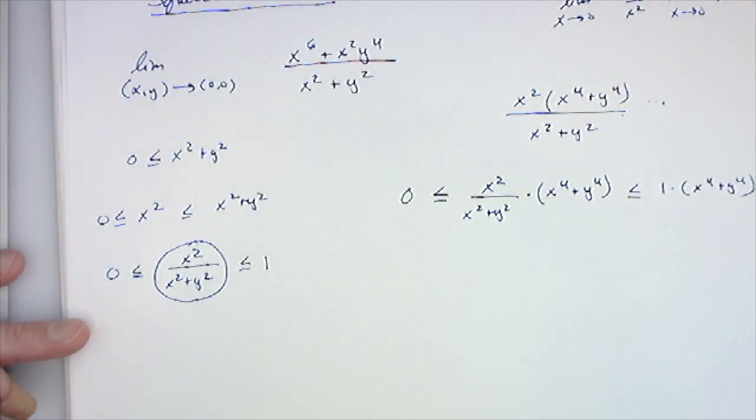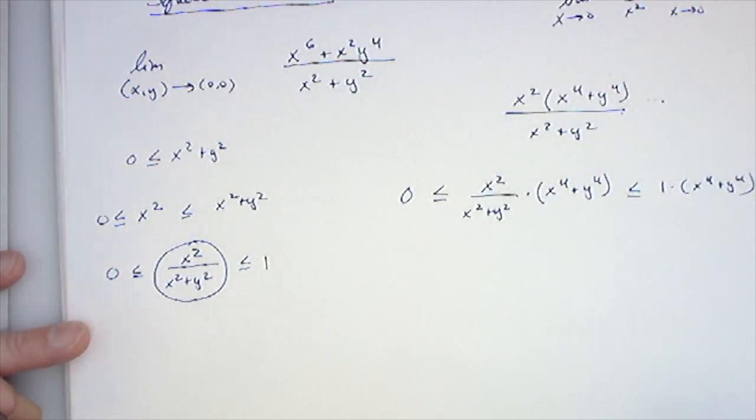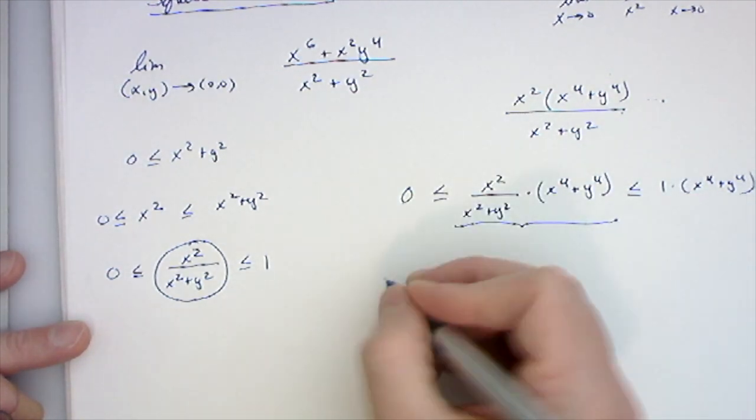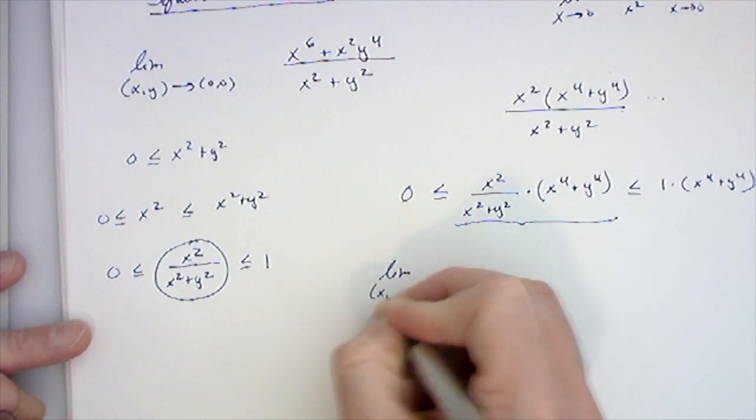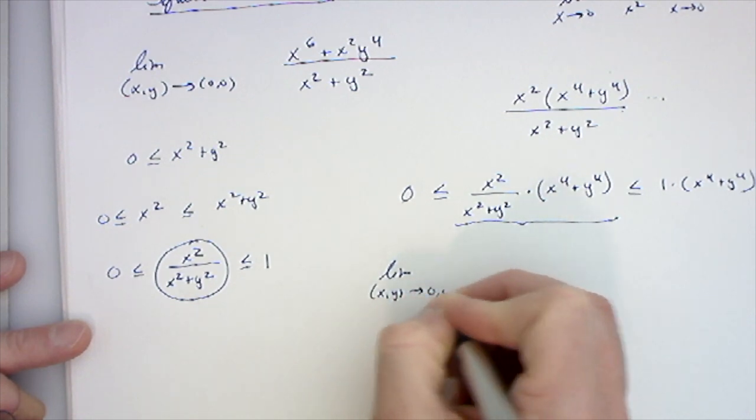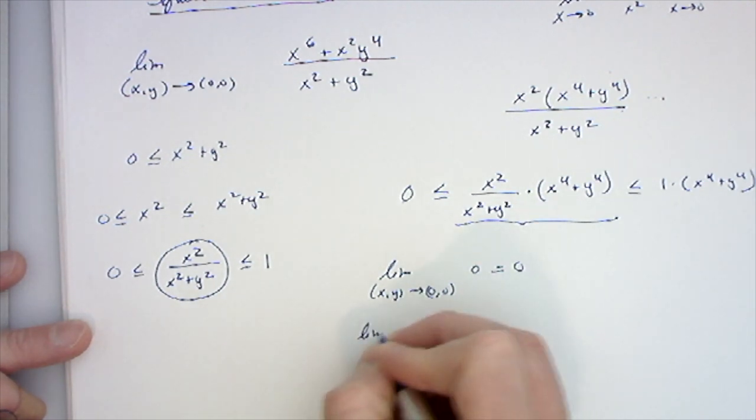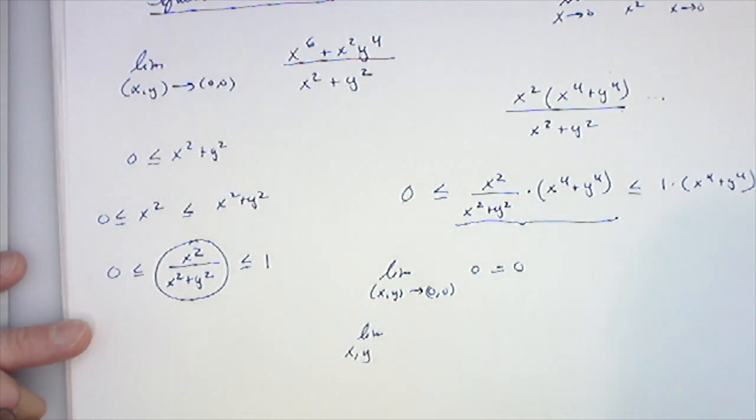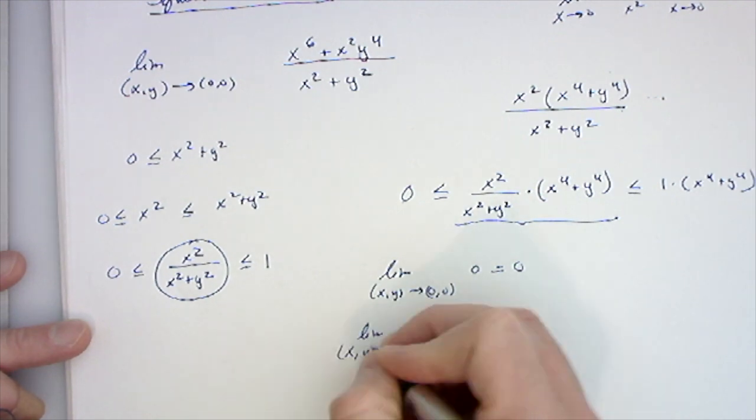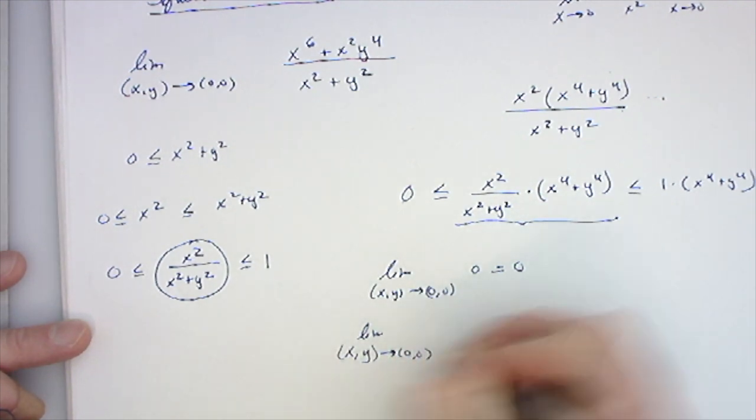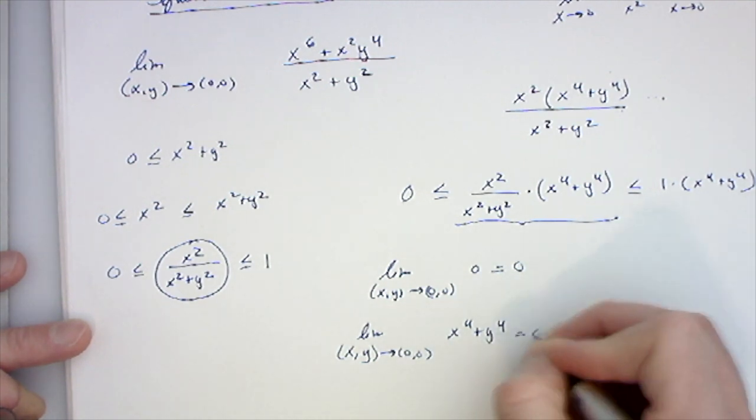But now I can take the limit of the left side and the right side. So again, we need the thing we want to find the limit of to be squeezed between two things. The limit as x, y goes to 0, 0 of 0 is obviously 0. The limit as x, y goes to 0, 0 of x to the 4th plus y to the 4th, I can just plug in 0s and get 0.